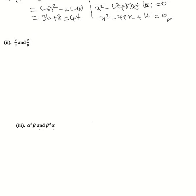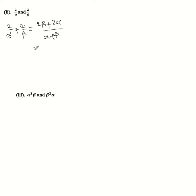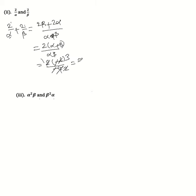Now for the roots 2/alpha and 2/beta. The sum of roots is 2/alpha + 2/beta = 2(alpha + beta) / (alpha·beta) = 2(-6) / (-4) = -12 / -4 = 3. So the sum of roots is 3.